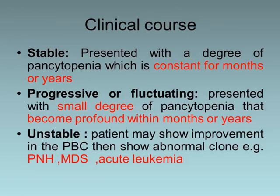The clinical course is either stable, in which the patient presents with a degree of pancytopenia that is constant for months or years; progressive or fluctuating, presenting with a small degree of pancytopenia that becomes profound within months or years; or unstable, where the patient may show improvement in red cells then develop an abnormal clone such as paroxysmal nocturnal hemoglobinuria, myelodysplastic syndrome, or acute leukemia.